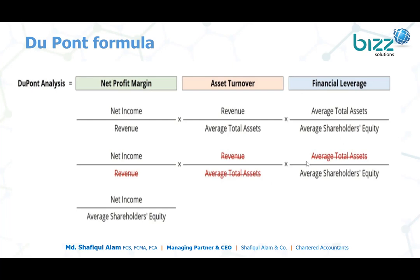For financial leverage, when an organization uses bank loans, that introduces leverage. If a company uses no leverage at all, then there is no positive leverage effect. Financial leverage is total average assets divided by average shareholders' equity.